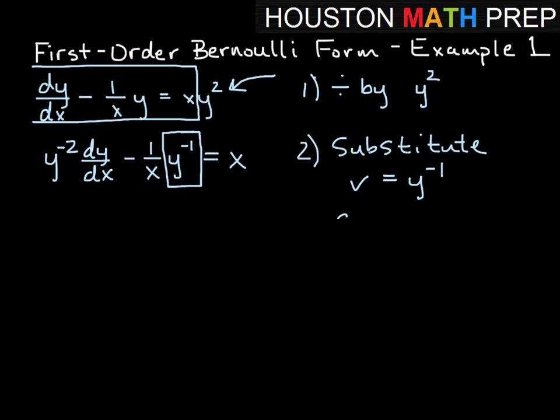And when we take the derivative of that, in other words, dv dx, that will just give us negative 1 y to the minus 2 dy dx.